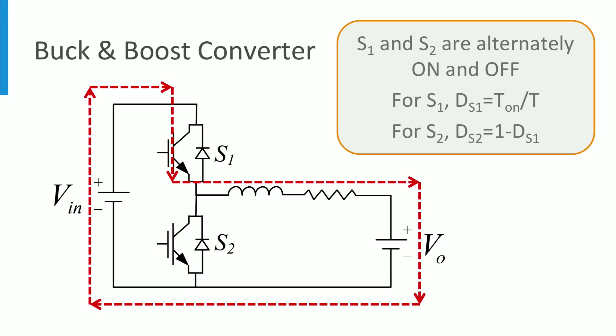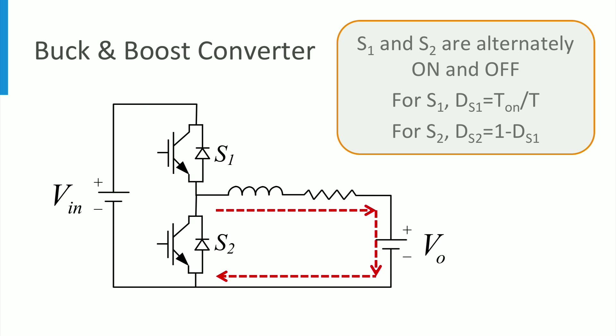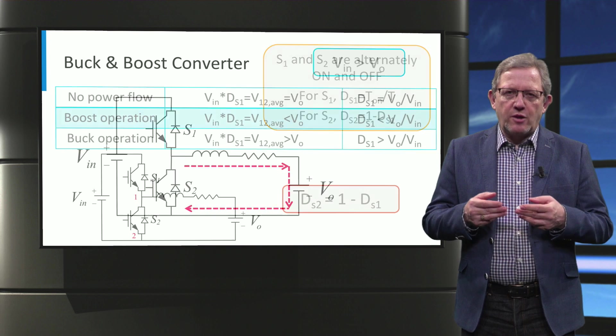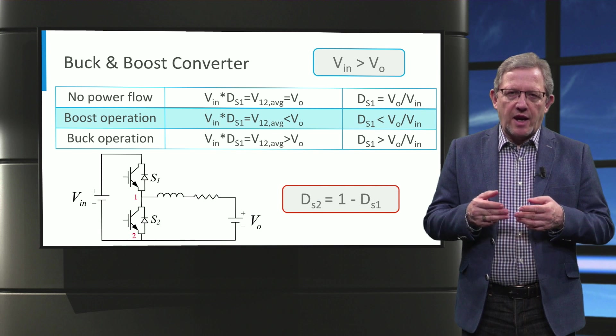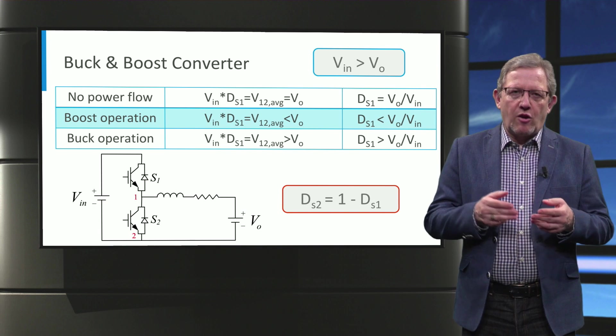The buck operation is when the switch S1 is conducting. When S1 is off, the freewheeling diode of S2 takes the current over. By varying duty cycle D from 0 to 1, we can vary the current direction and whether it is buck or boost operation.